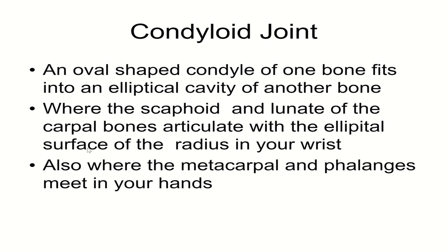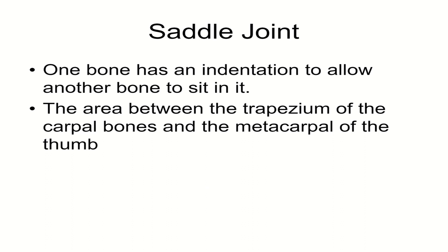Condyloid joints create an oval-shaped movement and allow for a smooth range of motion. An example is where your wrist meets your arm — you have the ability to pull your hand up but also fold it down. Saddle joints are where each bone has an indent and it allows for a rocking motion in two directions. This is what you have at the base of your thumb with the trapezium, giving your thumb quite a bit of range of motion compared to the hinge joints in your phalanges.